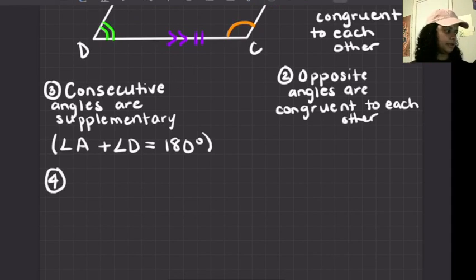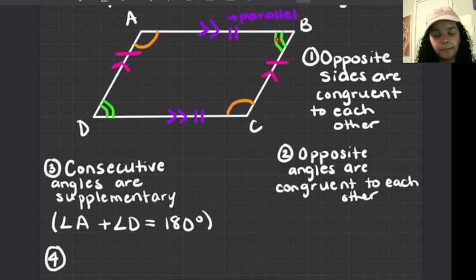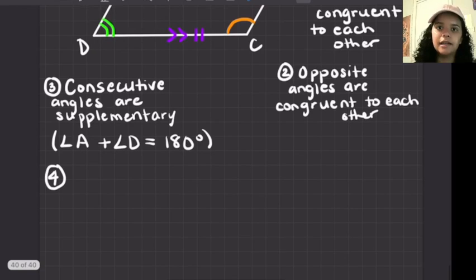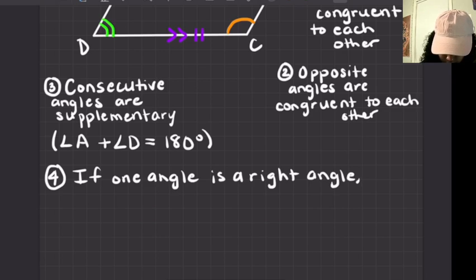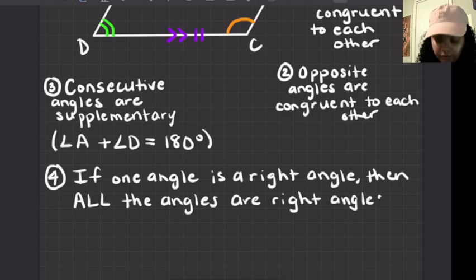Property number four: if one angle is a right angle — say 90 degrees — the opposite angle also has to be 90 degrees because they're congruent. The consecutive angles must add up to 180, and 90 plus 90 is the only option. So if one angle is a right angle, then all the angles are right angles.